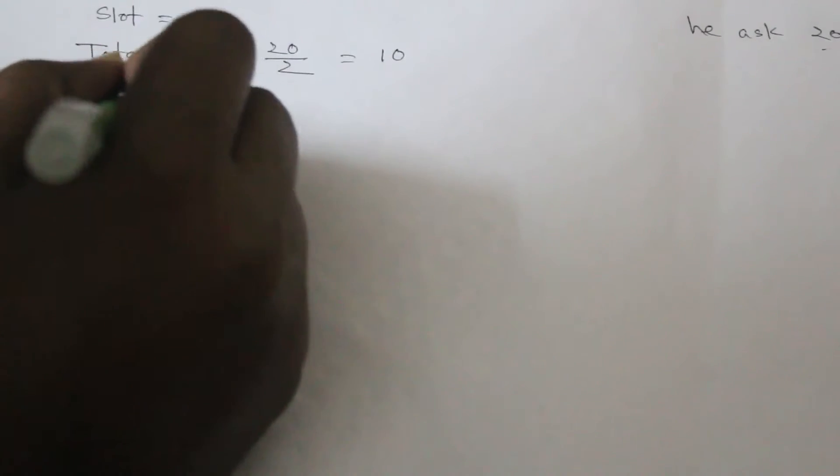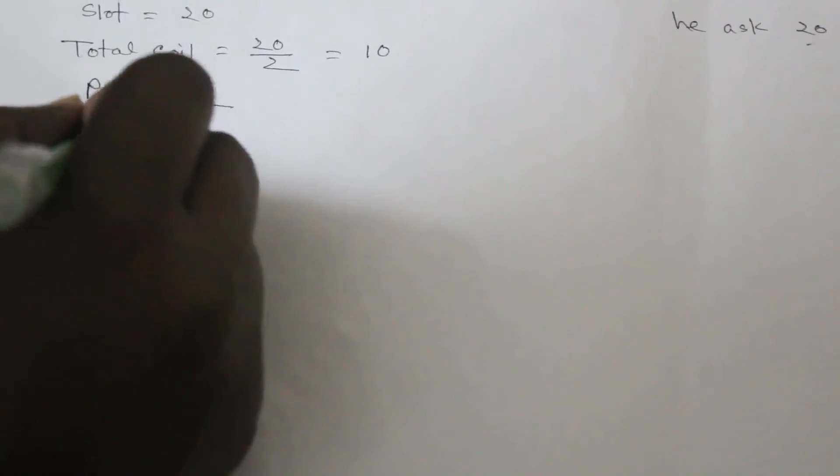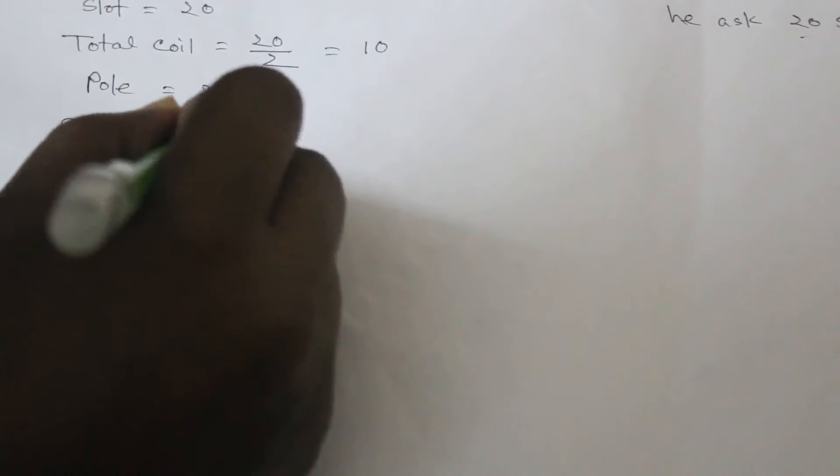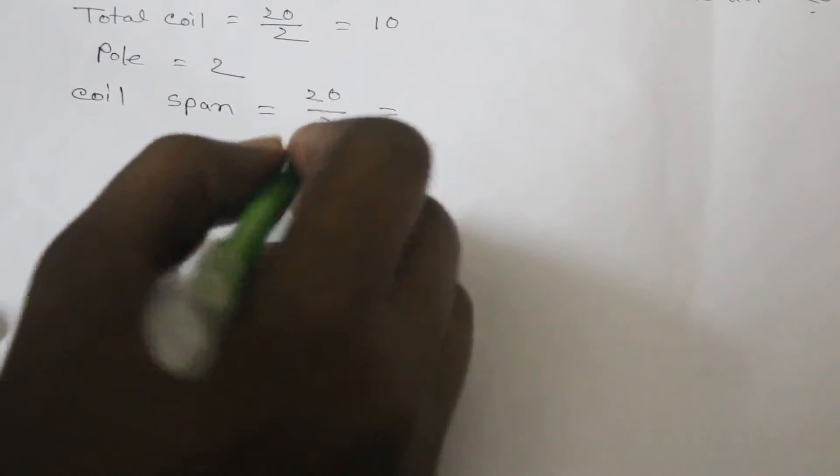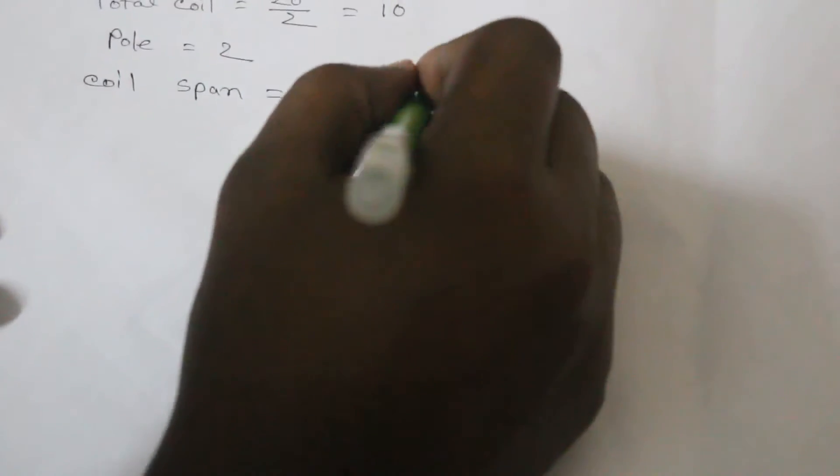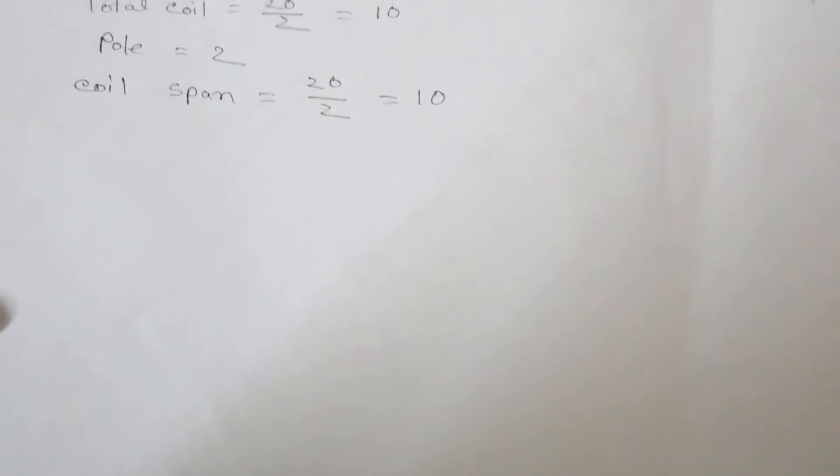Here is coil span. Here is pole. Pole is 2 coil span. Coil span means a coil 2 side far. This is slot number by pole. This is 2 pole. Here is 10.